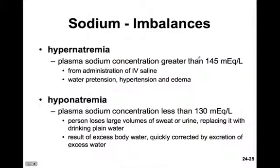Hyponatremia is much less common — plasma sodium concentrations below 130 milliequivalents per liter. A person losing large volumes of sweat or urine loses a lot of salt, and if they replace it with plain drinking water without replacing sodium, we'll see a hypotonic solution and hyponatremia. If there's excess body water, we can quickly correct it by excreting the excess.